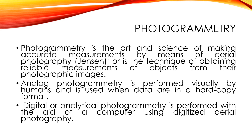Photogrammetry has two types: Analog Photogrammetry and Digital or Analytical Photogrammetry. Analog Photogrammetry is performed visually by humans and used in hardcopy format. Digital or Analytical Photogrammetry is performed with the aid of a computer using digitalized aerial photography.